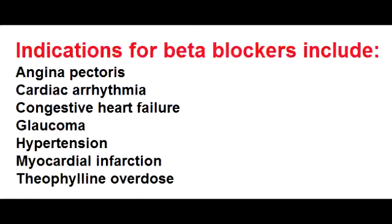Name the beta blockers effective in supraventricular tachycardias. The beta blockers used in supraventricular tachycardias include metoprolol and esmolol. Beta blockers decrease the AV conduction velocity and are the class 2 antiarrhythmics.